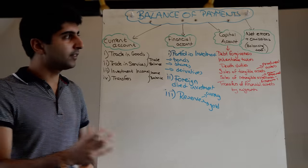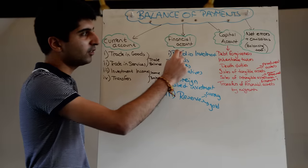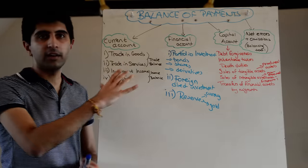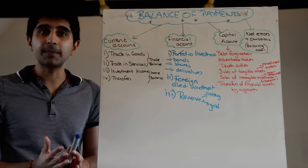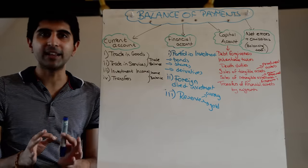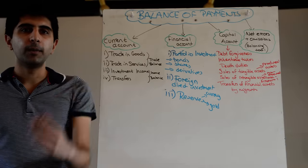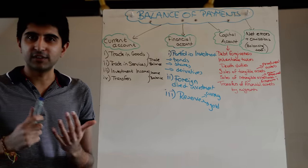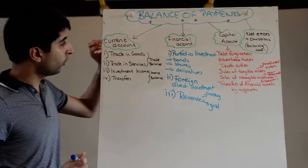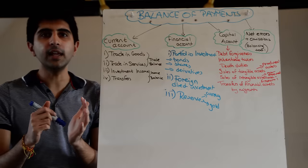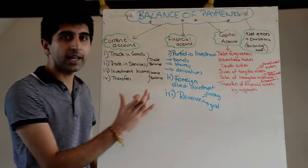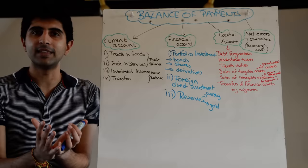That money tends to come from surpluses in the financial account and/or the capital account. The whole spreadsheet needs to balance — it's not called a balance of payments for nothing. The whole record has to balance. So what often happens is if a country is experiencing a large current account deficit, they will often record a financial account surplus which balances the entire account.